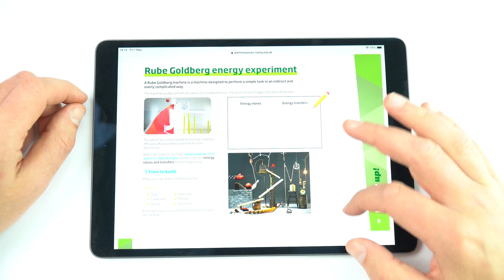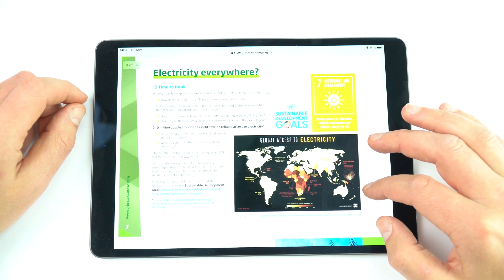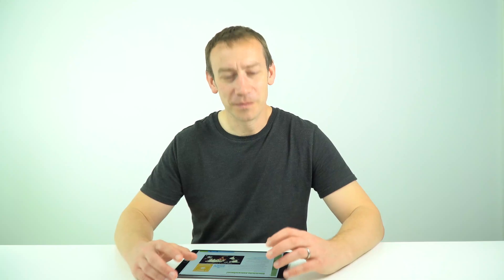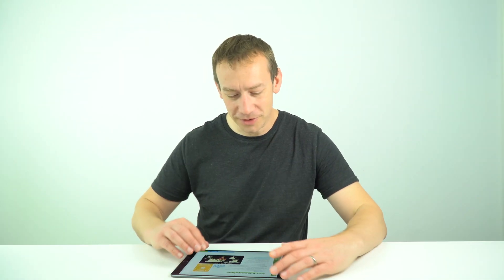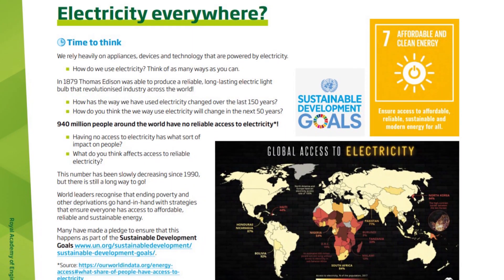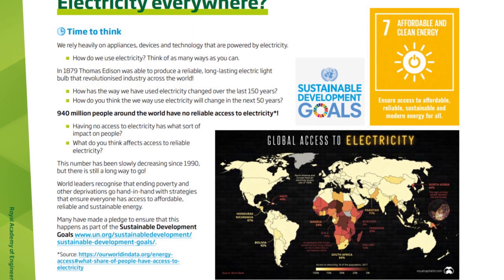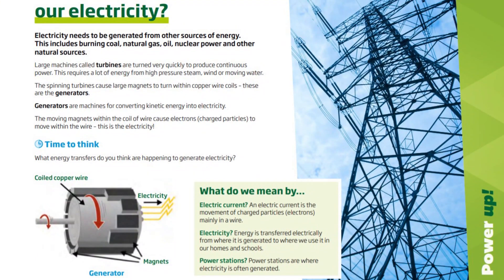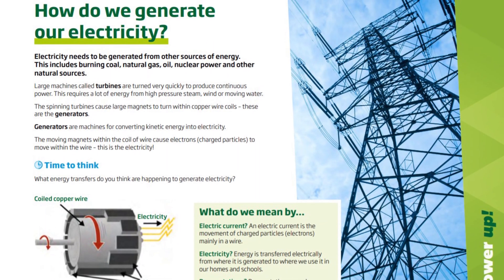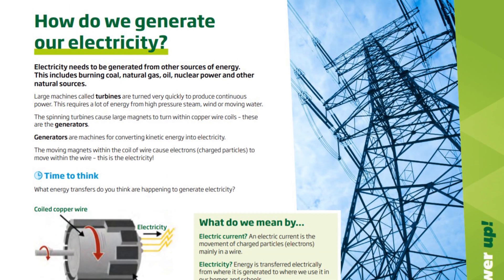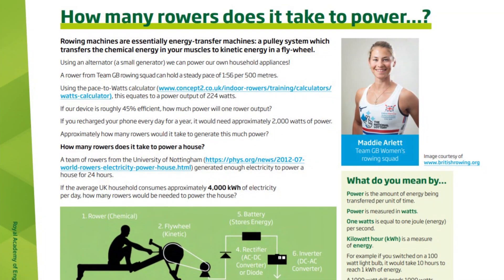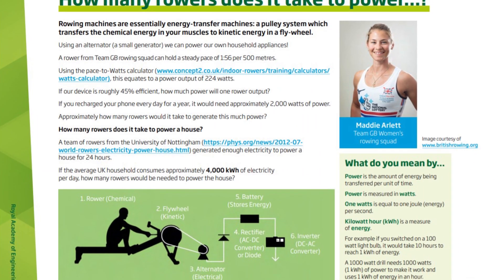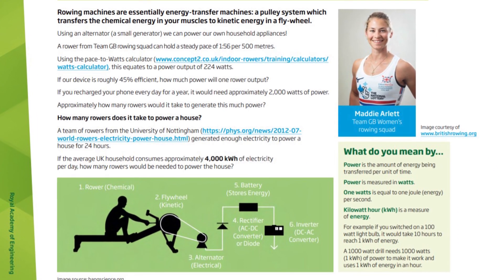The next part of the resource looks at the energy demands of society and how we actually generate electricity. There's some information about global access to electricity and how we generate it in power stations, and then there's also a really nice task which introduces some more complicated mathematics — looking at the rate of energy transfer, which is power.